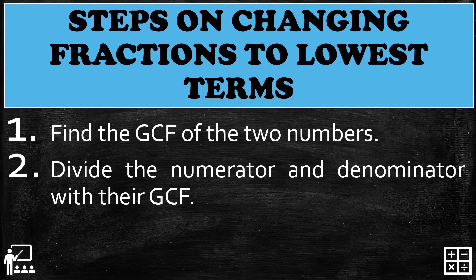The two steps on changing fractions to lowest terms are: first, find the GCF of the two numbers; and second, divide the numerator and denominator by their GCF.